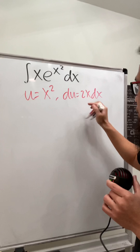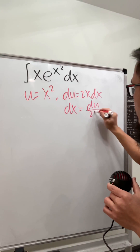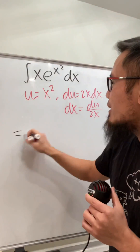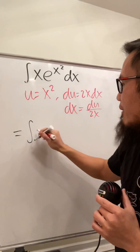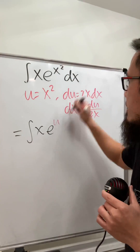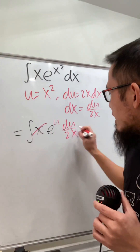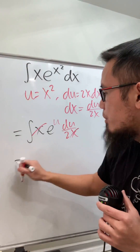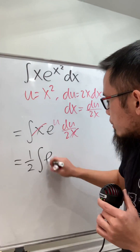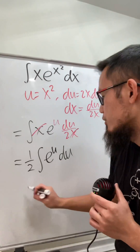I want to show you the cancellation. Let me divide the 2x on both sides — we get dx is equal to du over 2x. Taking this integral to the u world, you'll see this is equal to the integral of x times e to the u, and dx is the same as du over 2x. Now you see the x and dx cancel out. We have the one-half multiple, so take that to the front, and then we integrate e to the u in the u world, which is just e to the u.